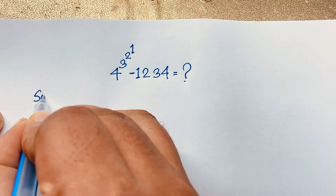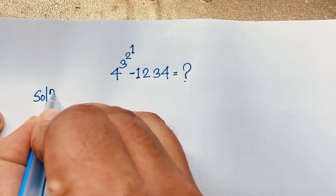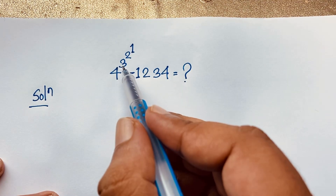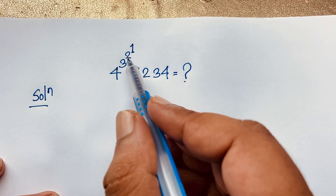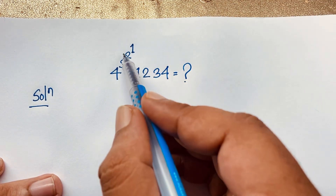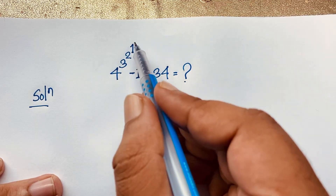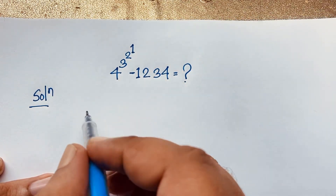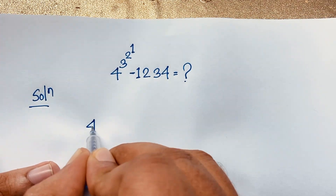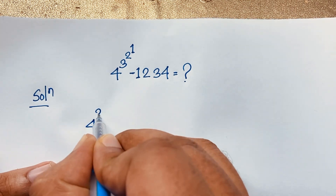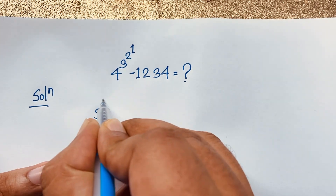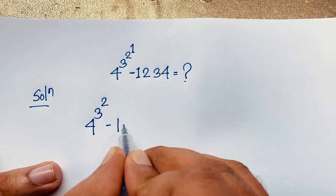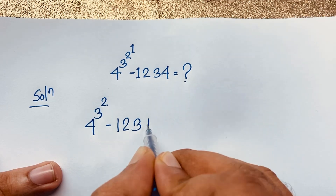I solved this question step by step as a method. Here is 4 to the power 3, 3 to the power 2, 2 to the power 1. So 2 to the power 1 equals 2. This expression is 4 to the power 3 and 2 to the power 1 equals 2, minus 1234.